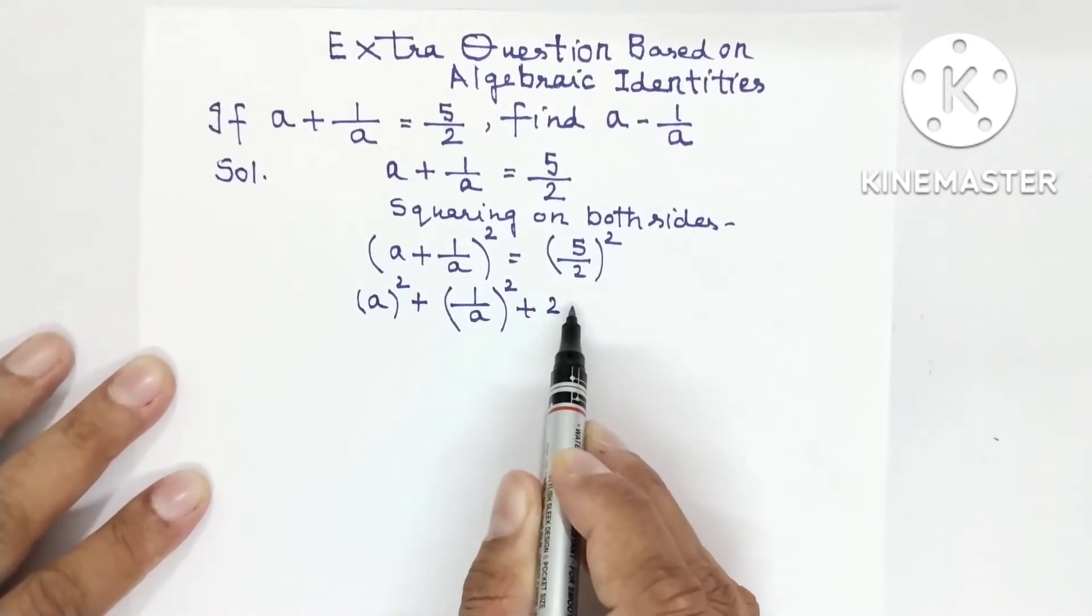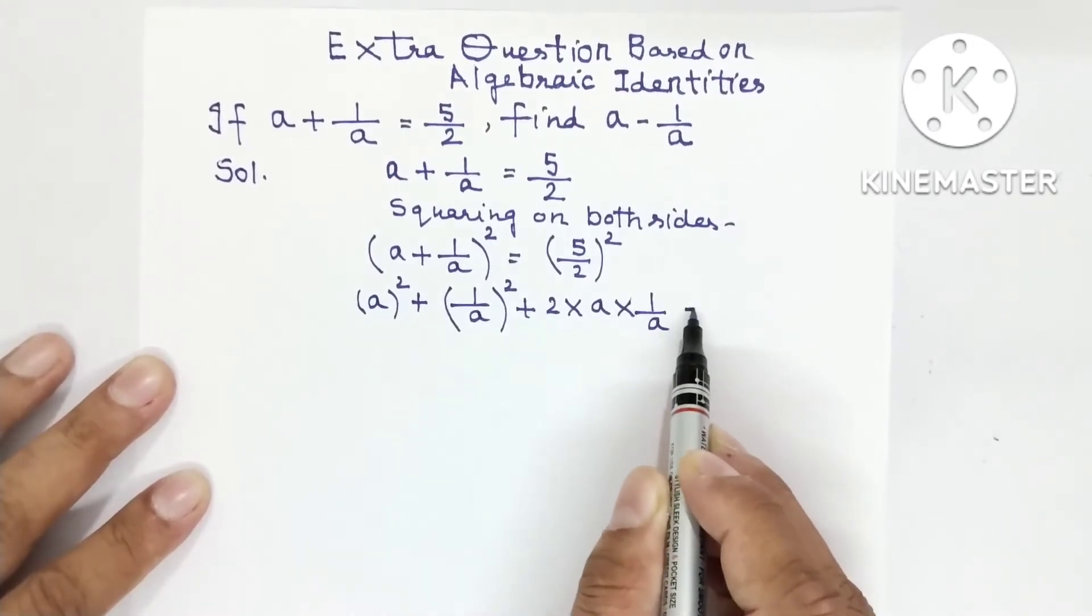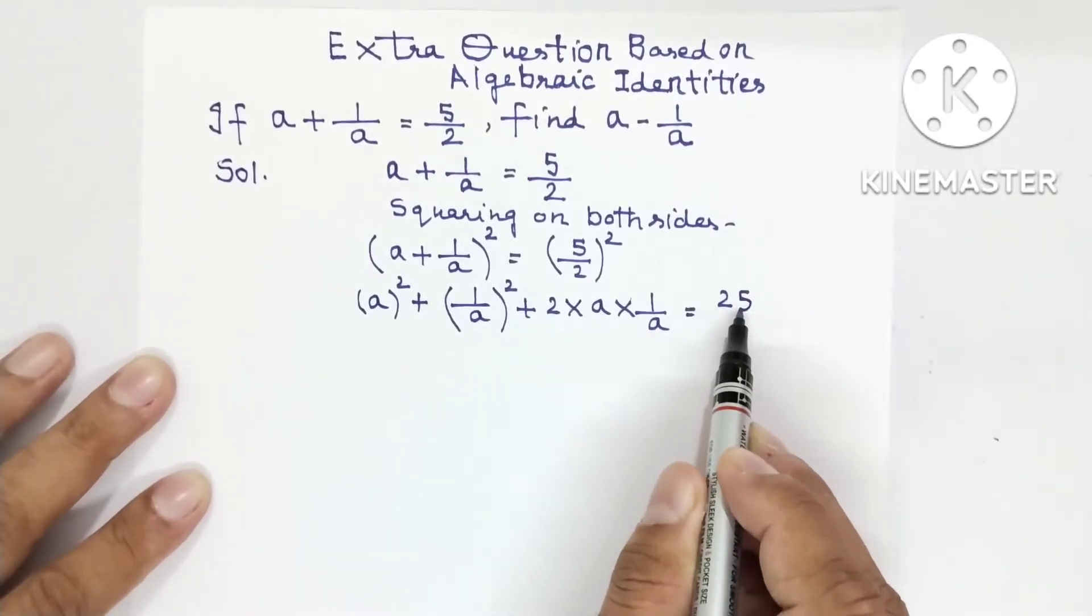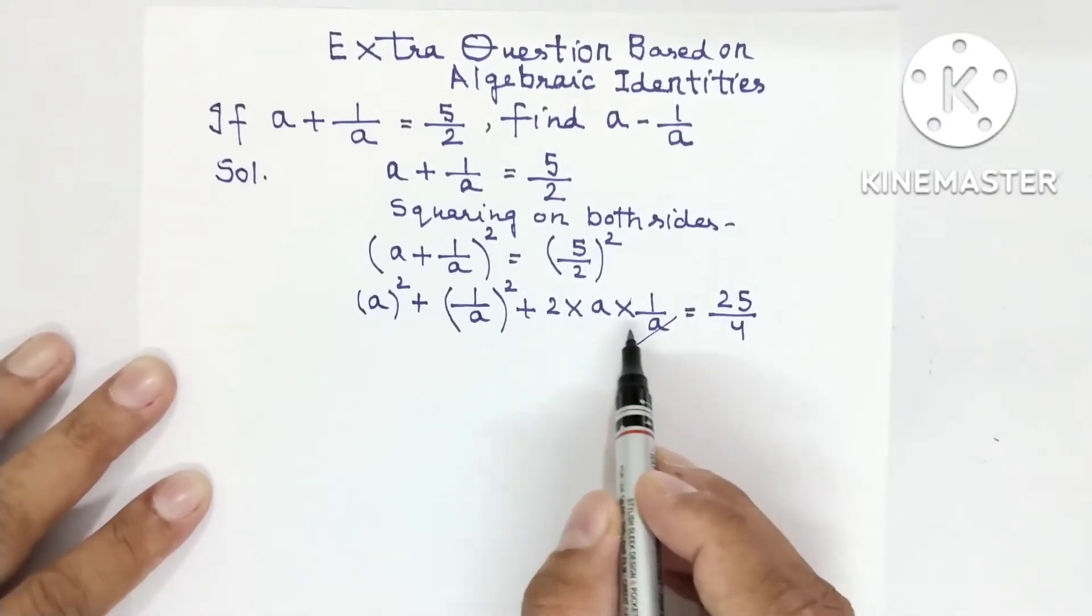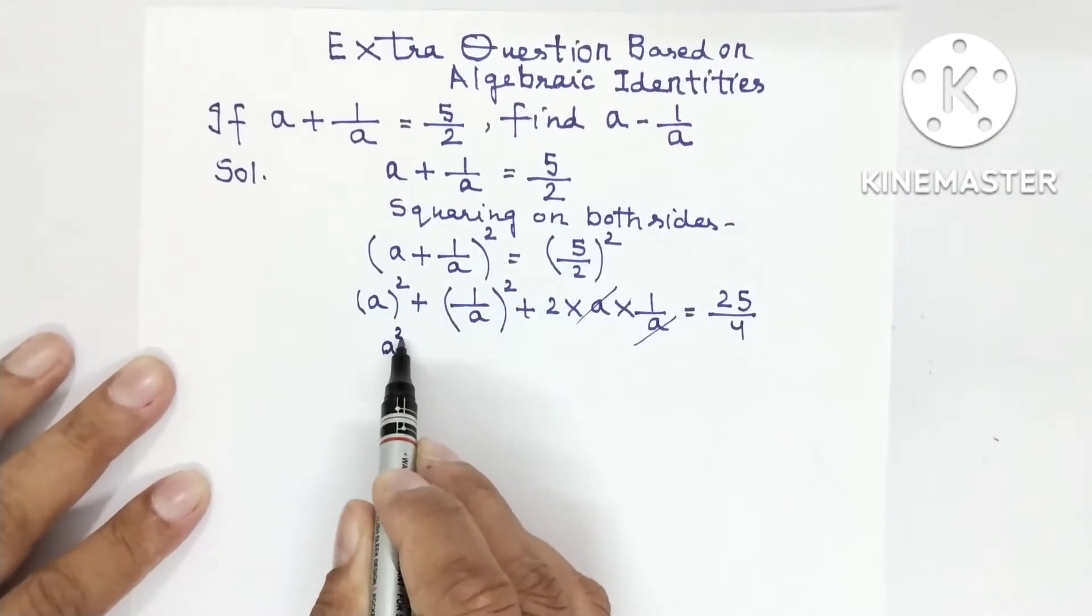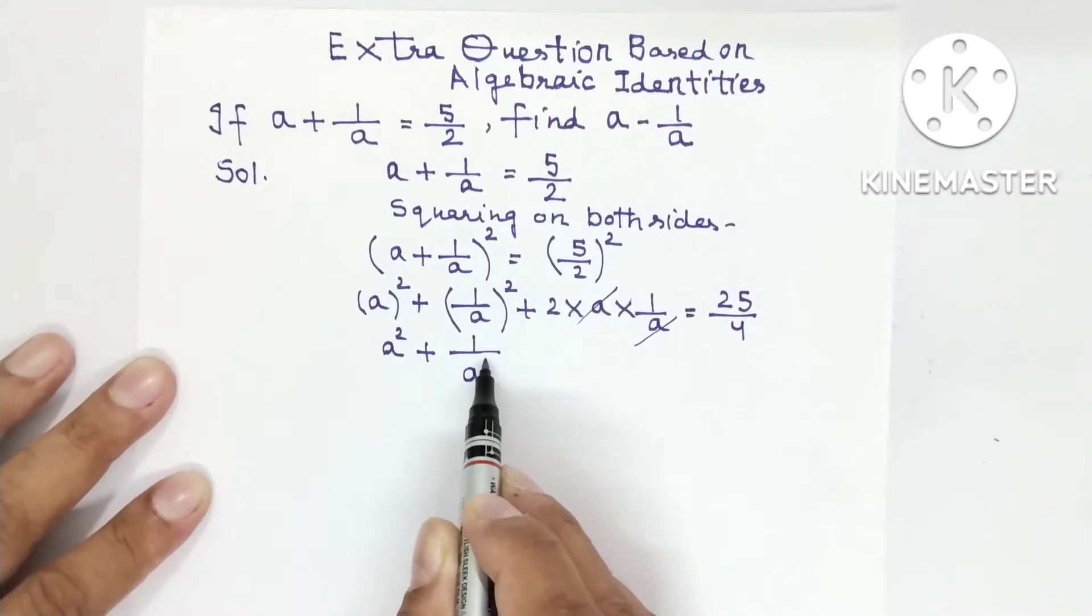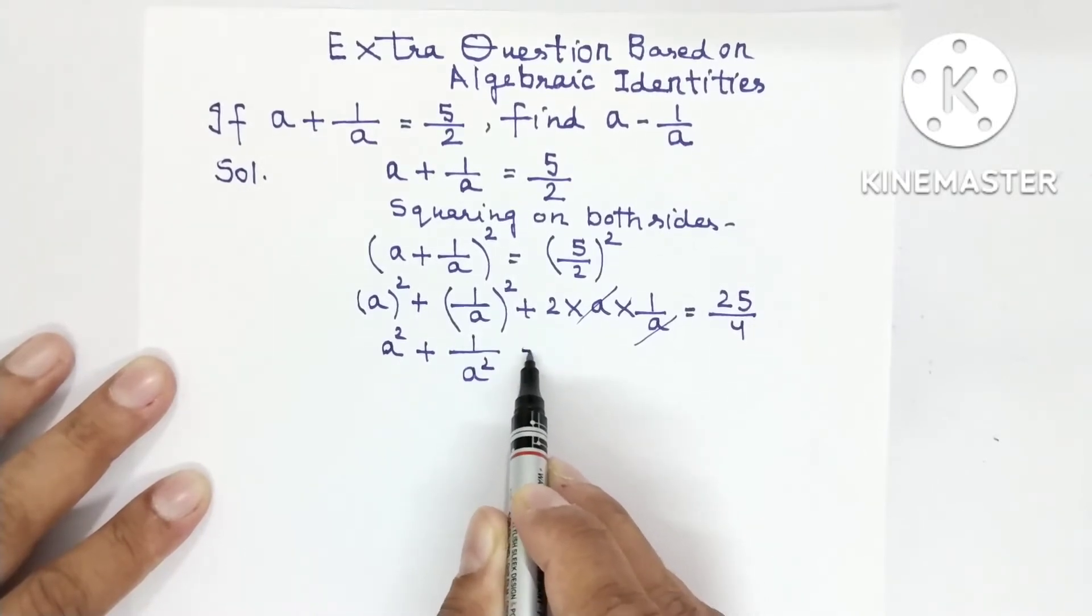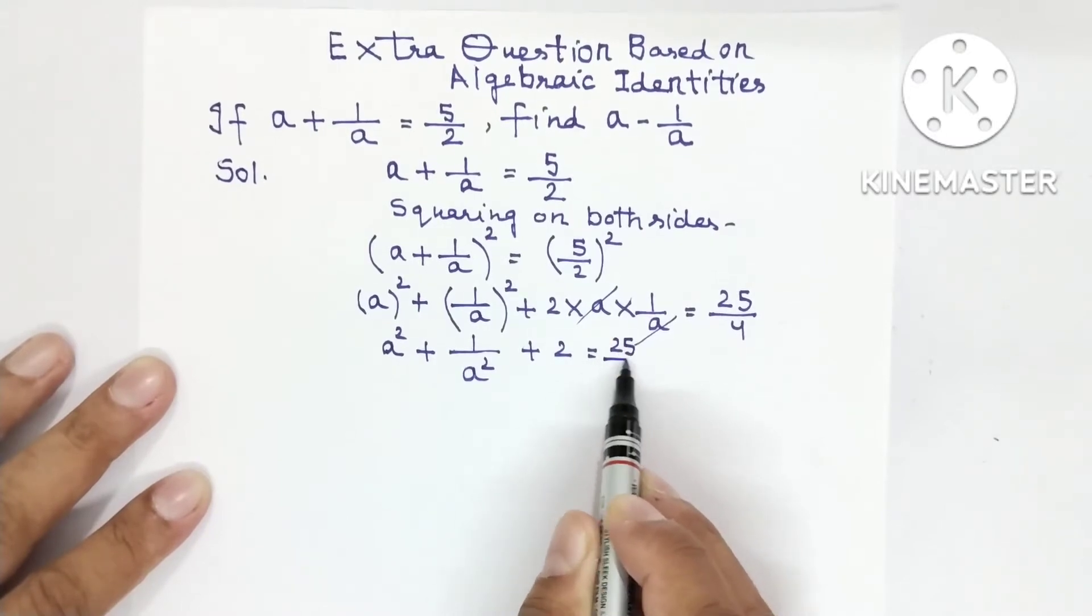Plus 2ab, 2 × a × 1/a. And this is 5 × 5 = 25, 2 × 2 = 4. Here a and a can be cancelled. a² + 1/a² + 2 = 25/4.